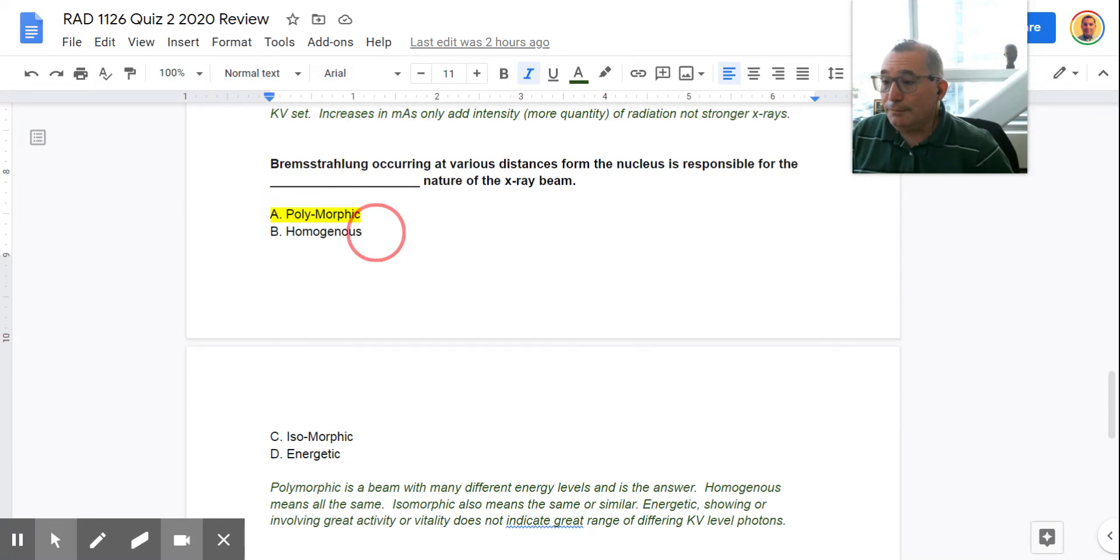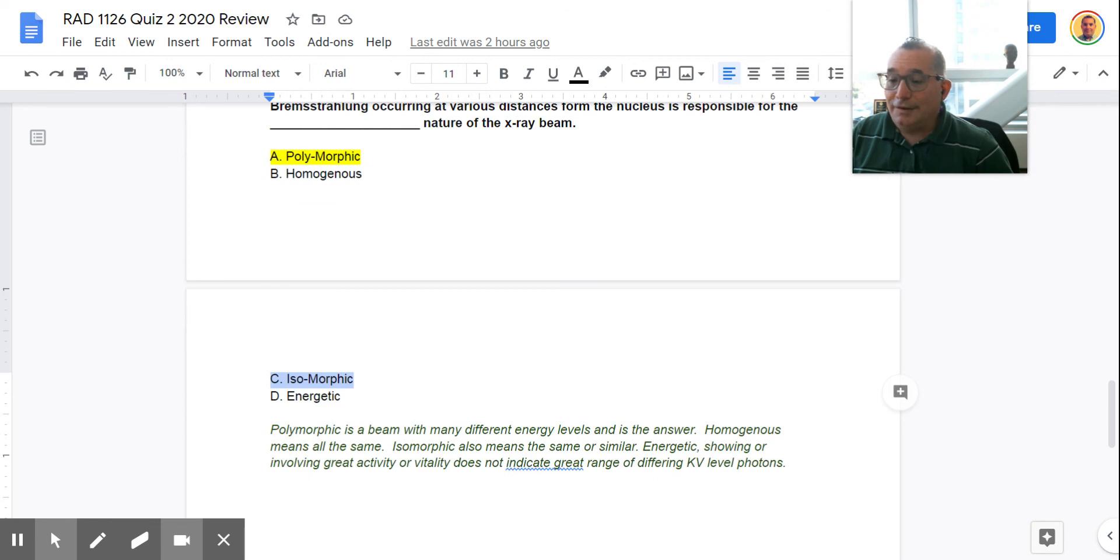Homogeneous means the same. Isomorphic means the same. And energetic are just showing a lot of activity. So that doesn't really discuss higher energy levels.